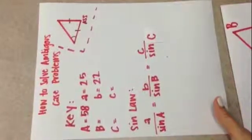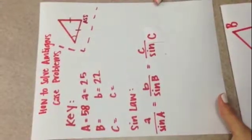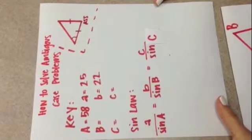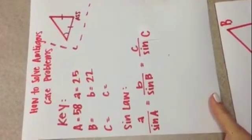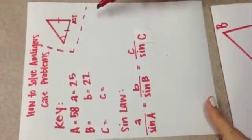Hello, today I will teach you how to solve ambiguous case problems for triangles that are not 90 degrees and when you are only given an angle and two sides.